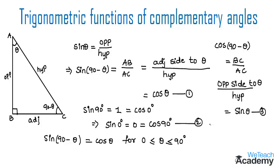We already know that sine 0 degrees equals 0 which equals cos 90 degrees, and sine 90 degrees equals 1 which equals cos 0 degrees. Let us name this equation 4. From equations 3 and 4, cos 90 minus theta equals sine theta for 0 less than or equal to theta less than or equal to 90 degrees. So sin 90 minus theta equals cos theta and cos 90 minus theta equals sin theta.